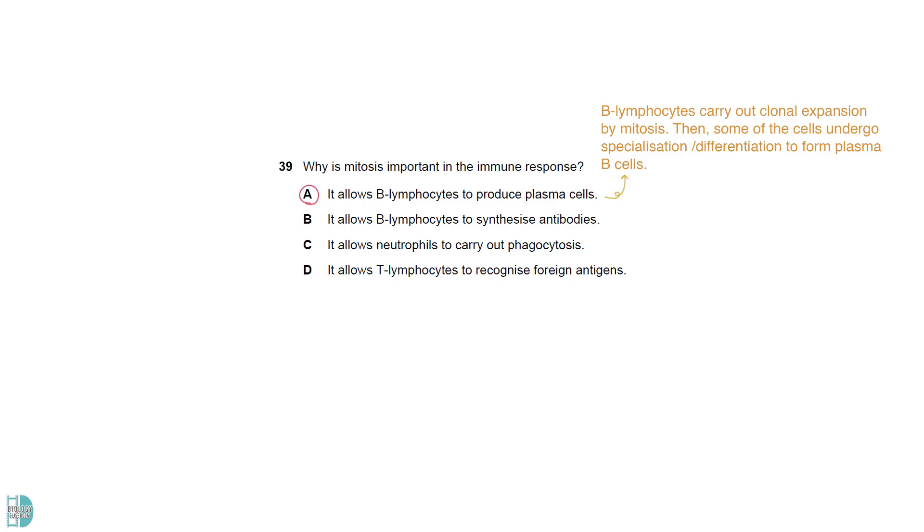A is the answer because B lymphocytes first carry out clonal expansion by mitosis. Then, some of the cells undergo specialization or differentiation to form plasma B cells. B requires protein synthesis. C is wrong because neutrophils are specialized cells. They can no longer divide. Furthermore, mitosis has nothing to do with their ability to engulf pathogens. D describes clonal selection.